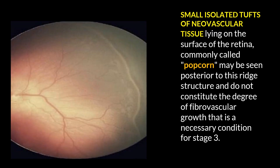These small condensations are called popcorn lesions and are seen in stage two. They are small isolated tufts of neovascular tissue lying on the surface of the retina — they have not started to grow towards the vitreous. They are called popcorn lesions because they look like popcorns. In stage two they are still in the plane of the retina and not growing towards the vitreous yet.